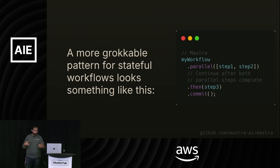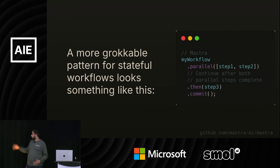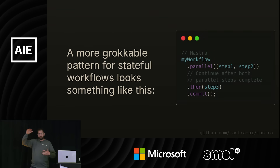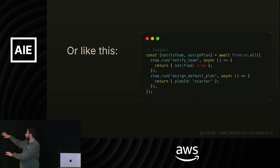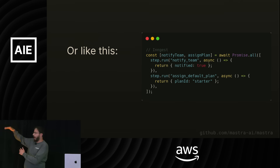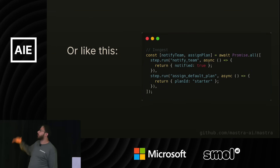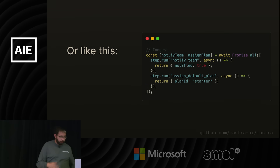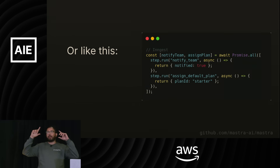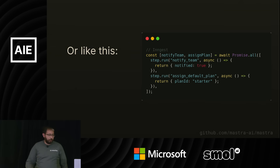More problematically, you should also probably not need your whole team to grok graph theory. A more grokkable pattern looks something like this — I've used Mastra workflows here. It's a fluent syntax; you can clearly see the control flow. You can see what happens, and then what happens after that, and what happens after that. When you're reading the code, your eyes can go from top to bottom. It's readable code. When we use nodes and edges and connect things, we lose that readability, which is really important when we're building software in teams.